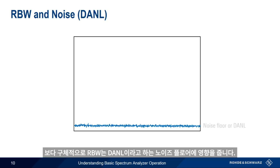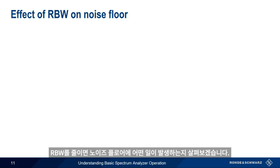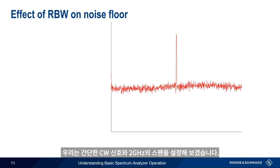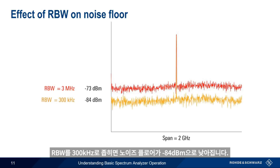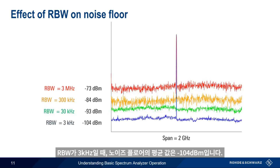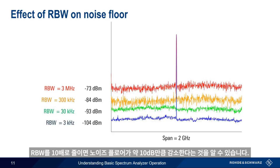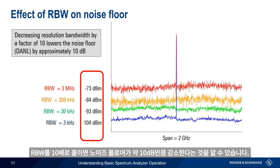The other important aspect of resolution bandwidth is the effect it has on noise — more specifically, on the noise floor, also referred to as the Displayed Average Noise Level, or DANL. The noise floor rises or falls depending on the chosen resolution bandwidth. With a resolution bandwidth of 3 MHz, the average noise floor is approximately -73 dBm. Narrowing to 300 kHz drops it to -84 dBm. At 30 kHz, the noise floor falls to -93 dBm, and at 3 kHz it averages -104 dBm. Decreasing the resolution bandwidth by a factor of 10 reduces the noise floor by about 10 dB. As a practical matter, if we want to see signals close to the noise floor, we should use narrower resolution bandwidths.